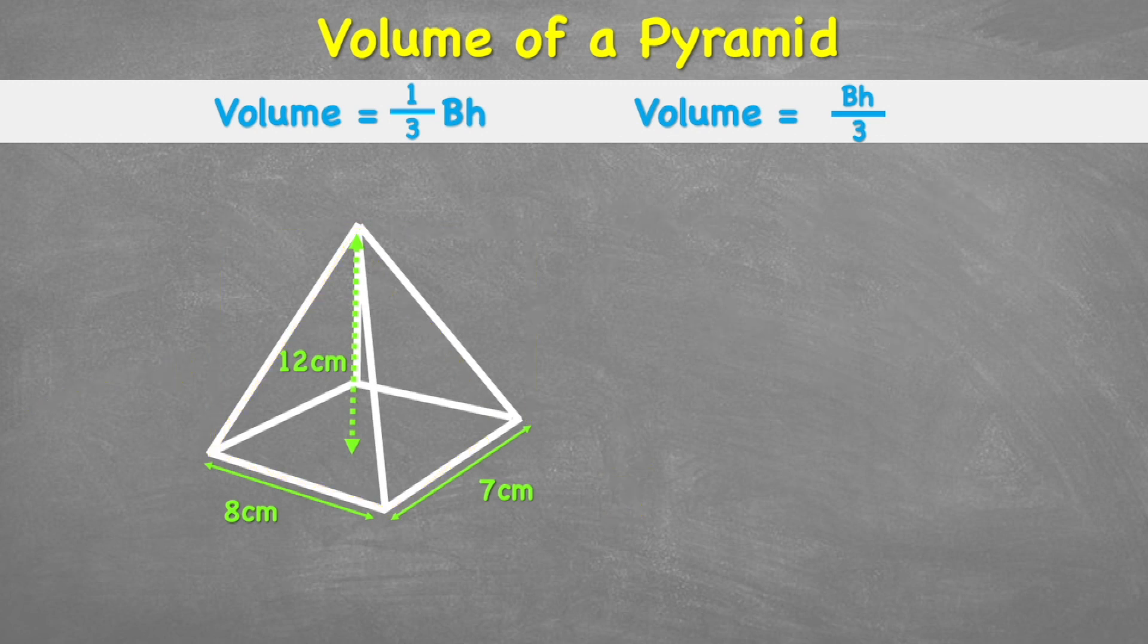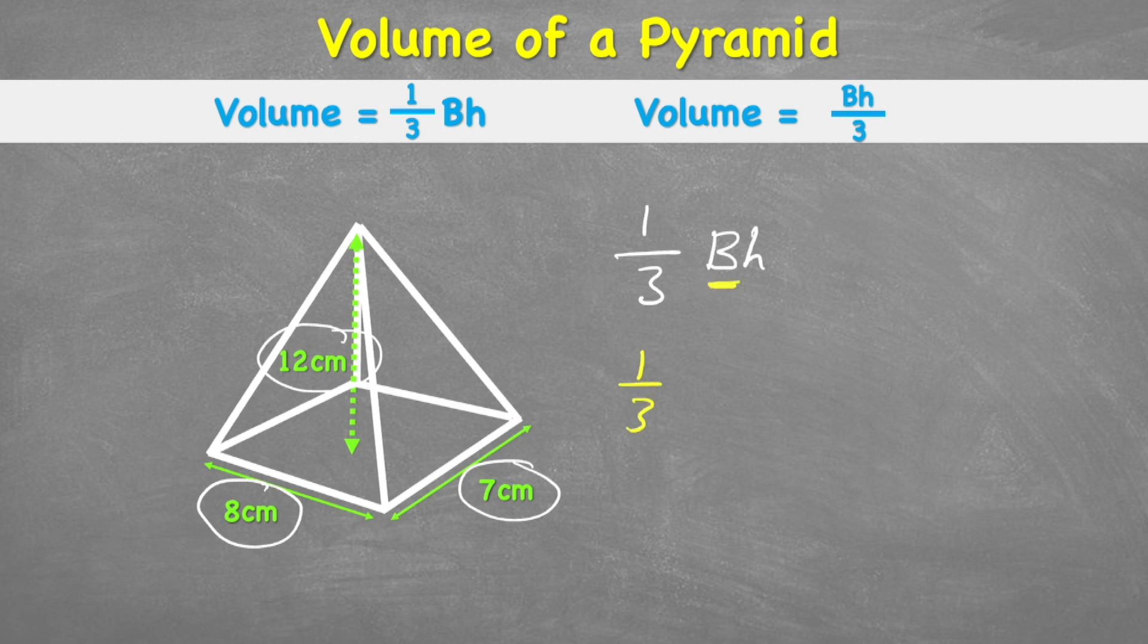So let's begin with this example. We can see that we have a base of eight centimeters and seven centimeters and a height of 12 centimeters. So let's start by writing our formula: one third times base times height. Now let's input any information we know. We have one third and the base. So let's work out the area of our base first of all.